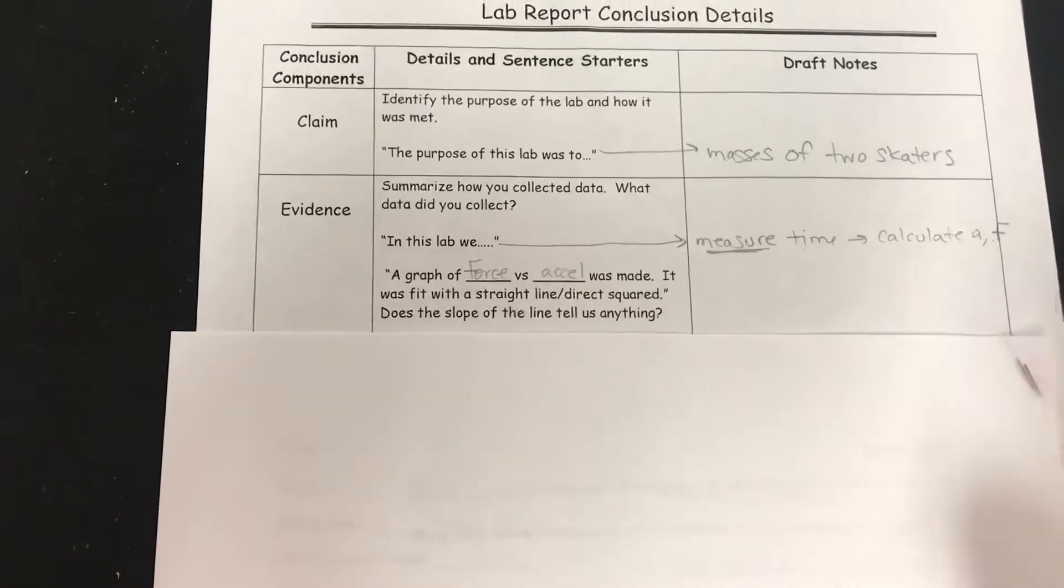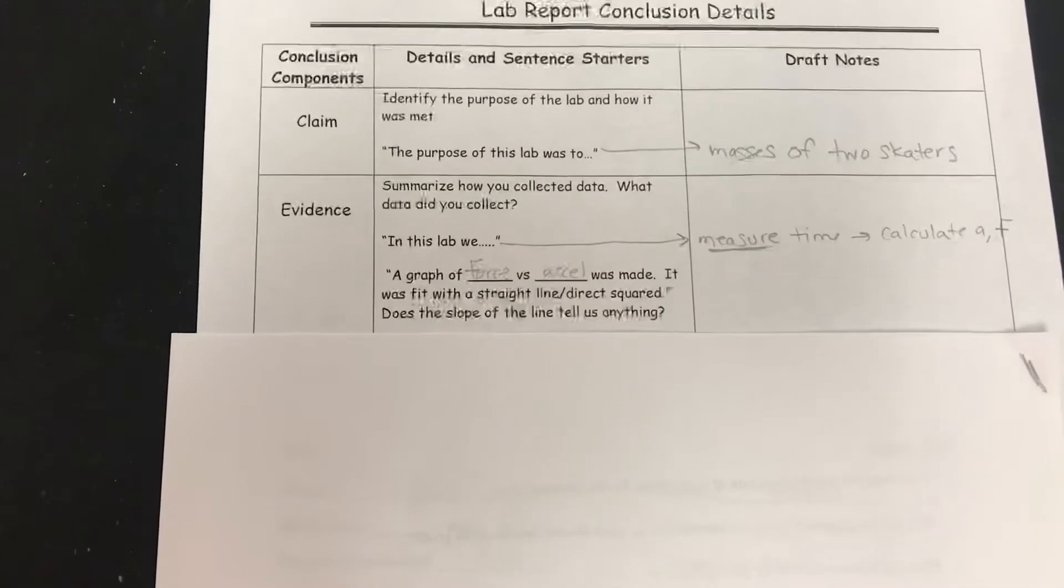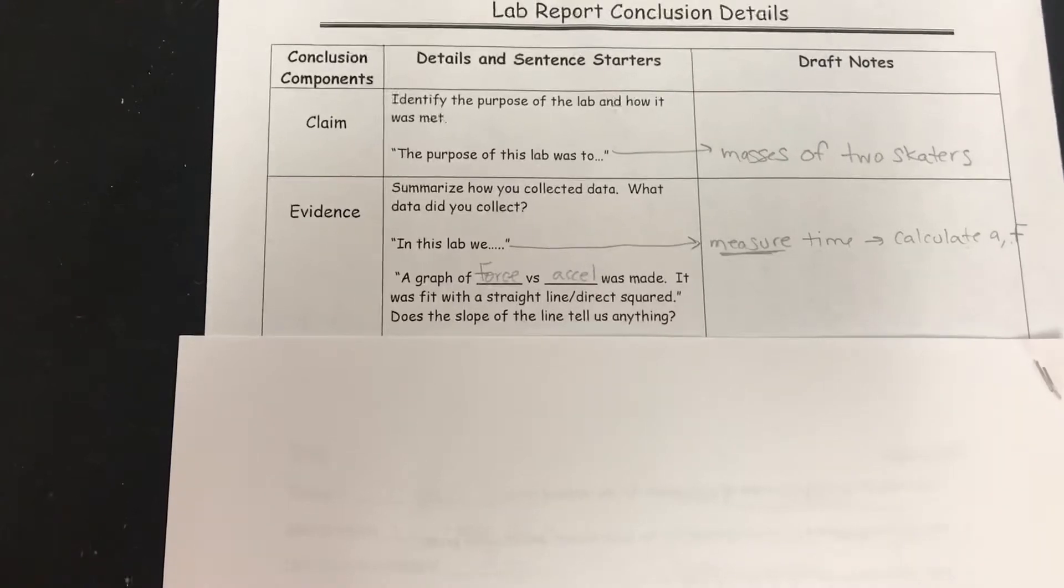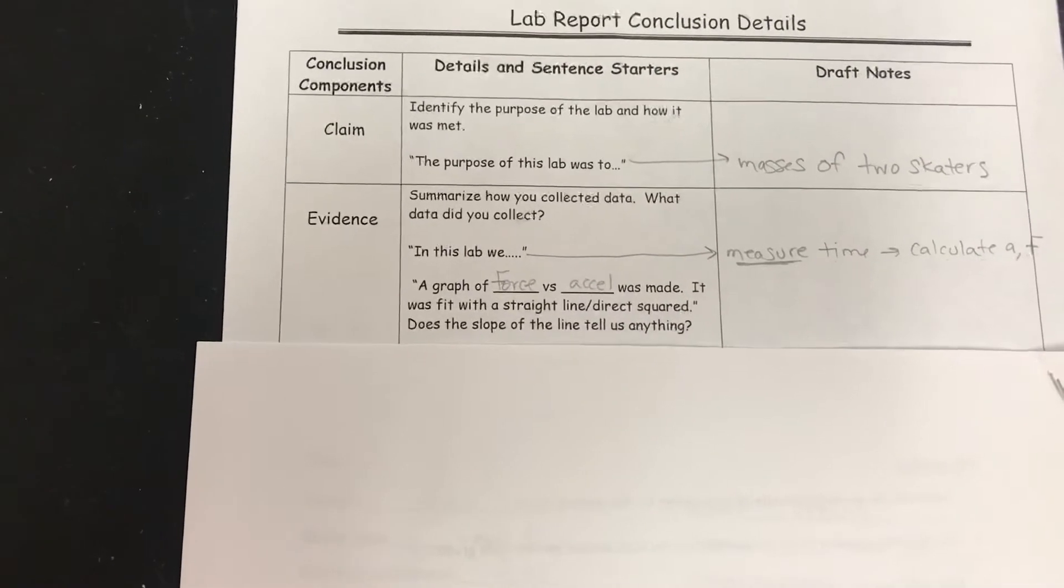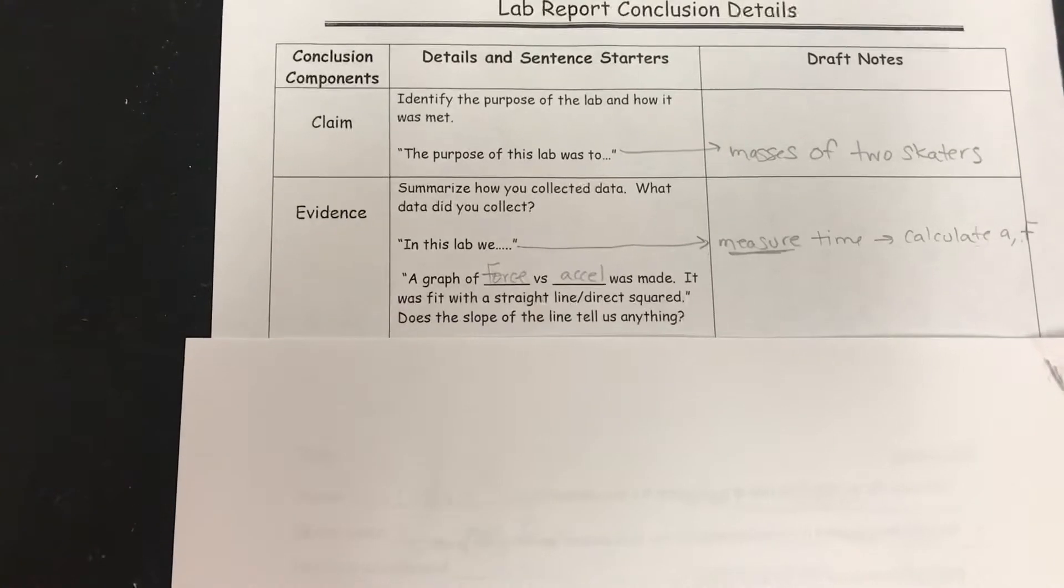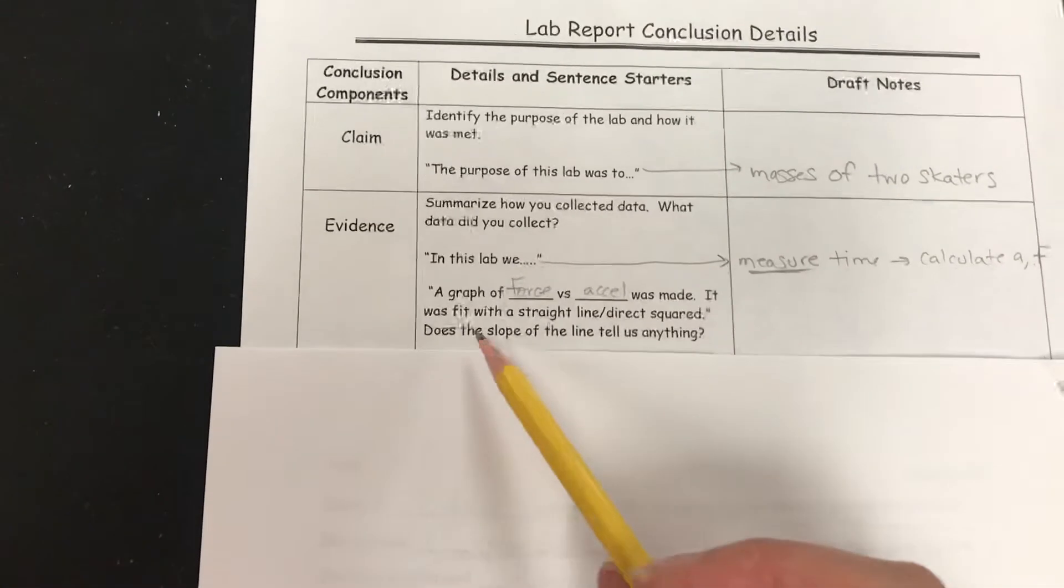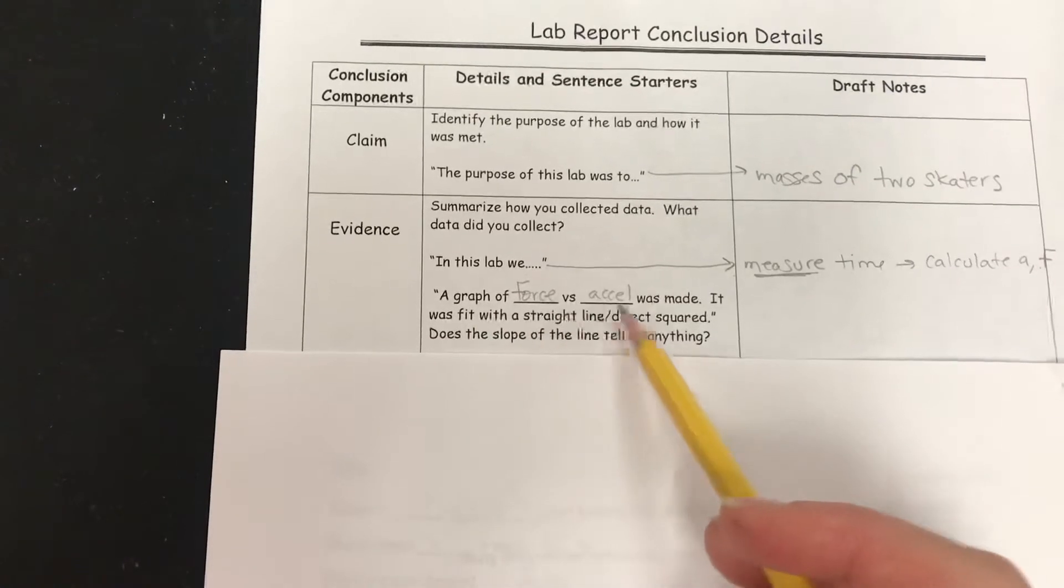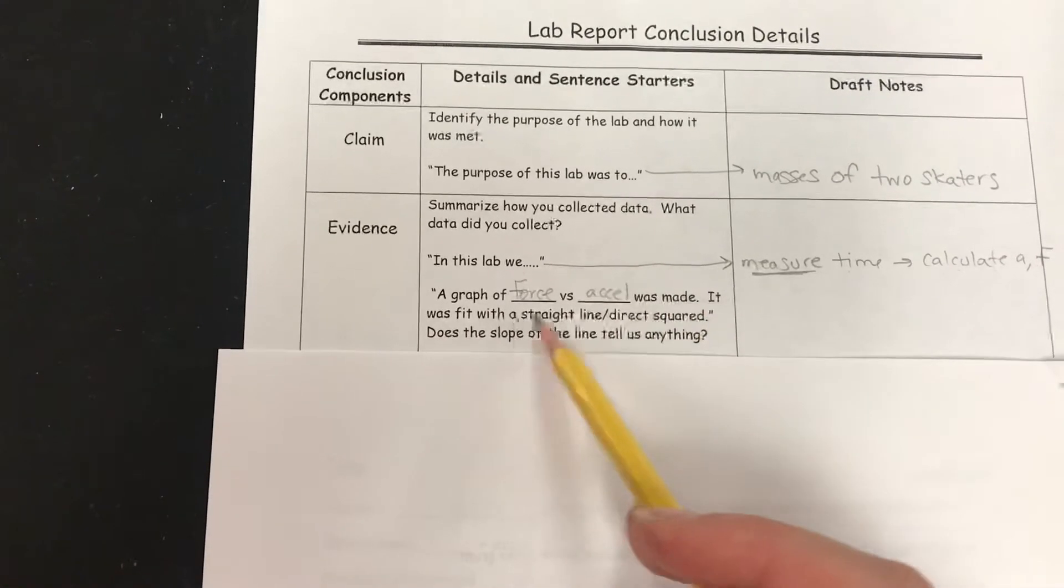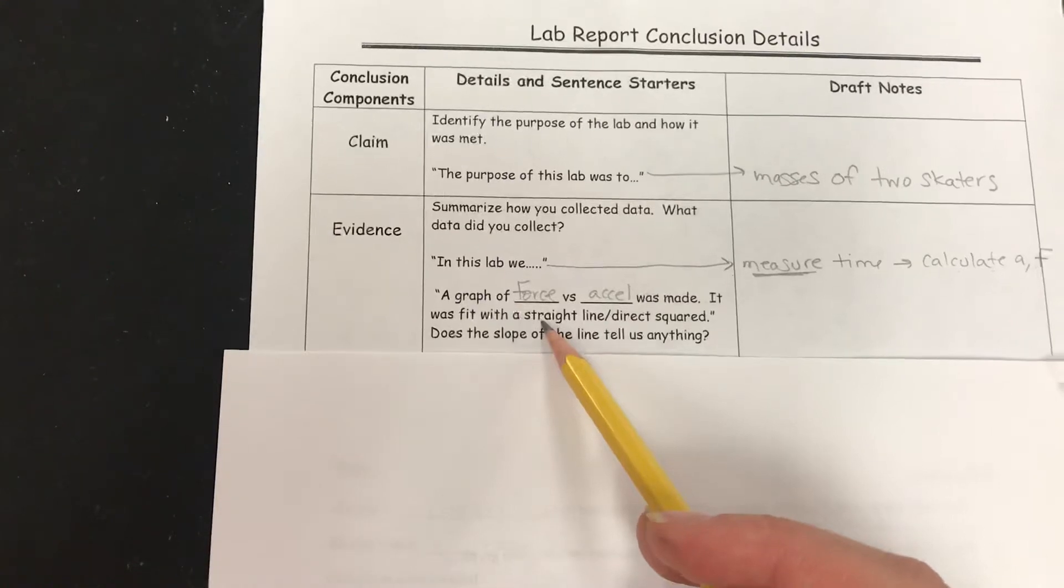I also want you to give me a little bit like, if somebody wasn't here yesterday, what would they have thought? So something like, we hooked a skater up to a rope that was connected to a bucket. The next sentence you need to write is, we made a graph of force versus acceleration. It was fit with a straight line.